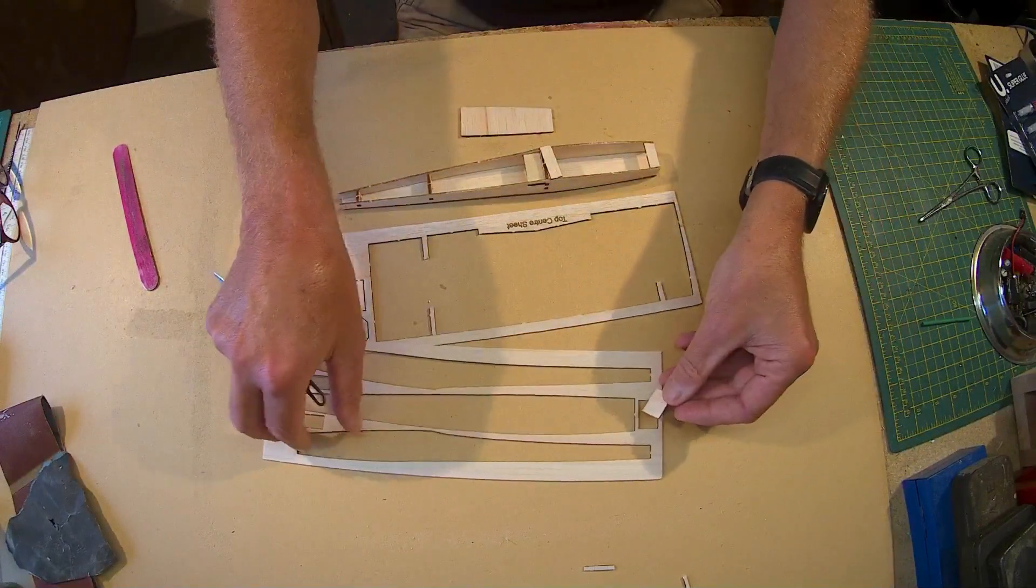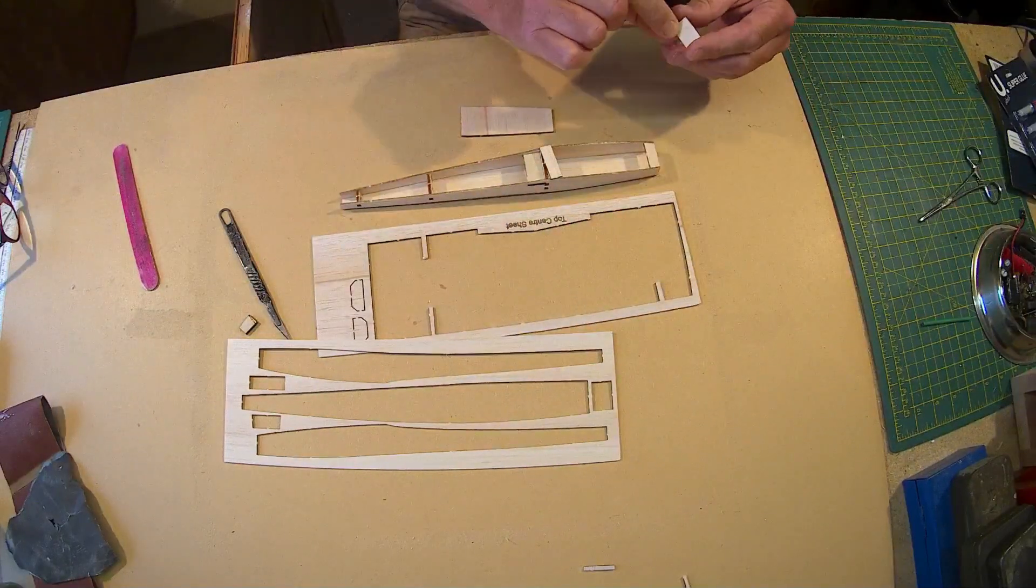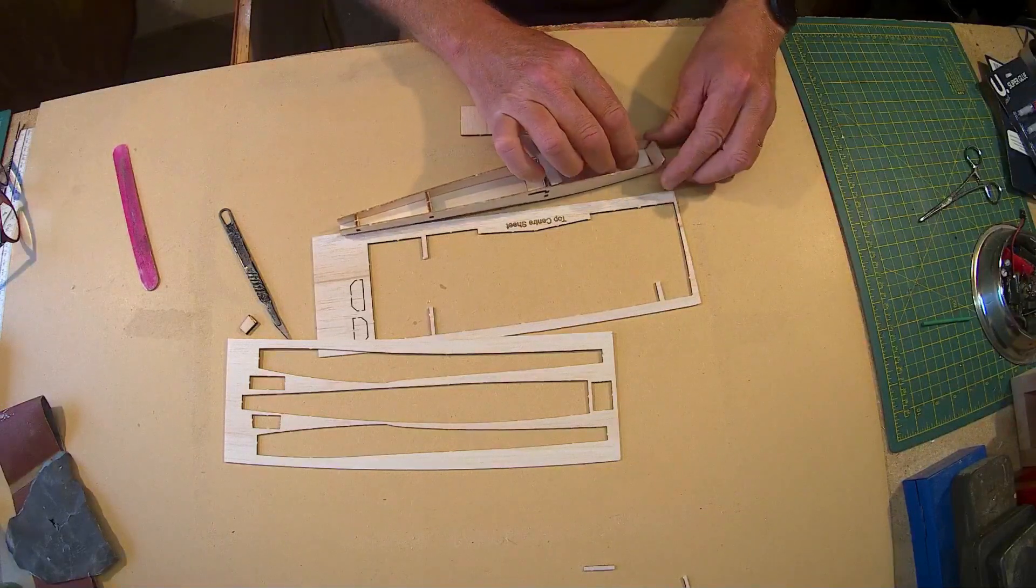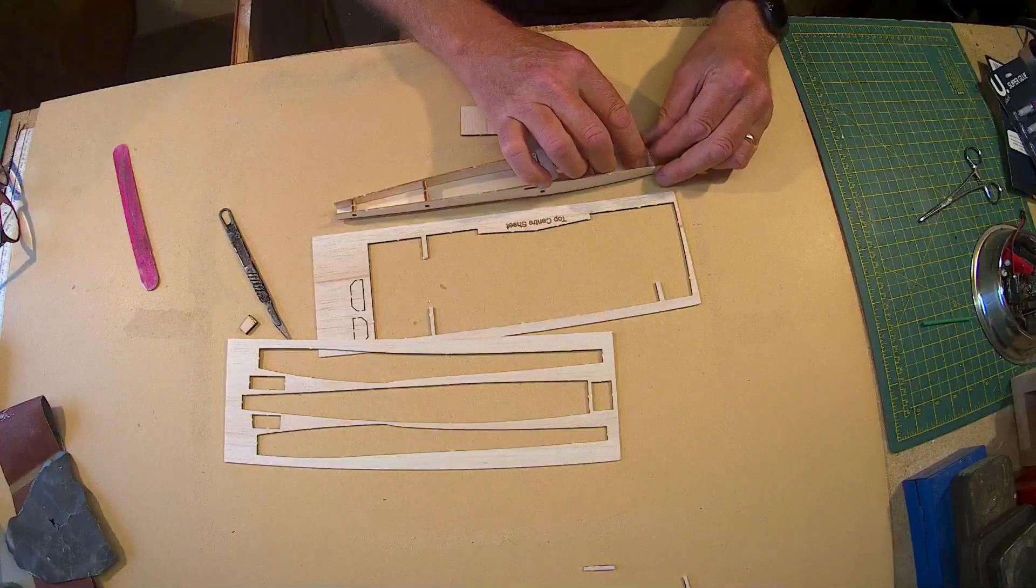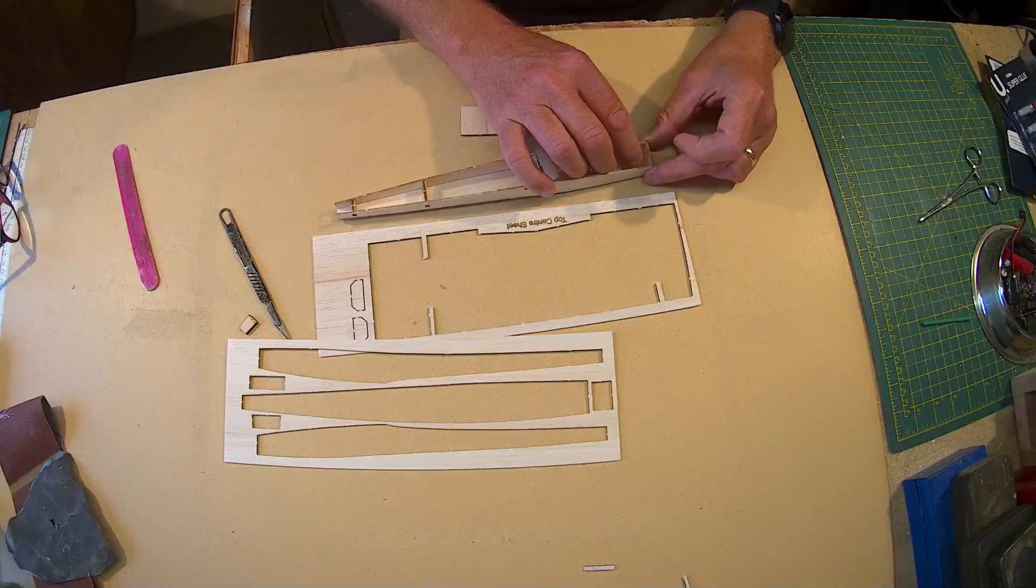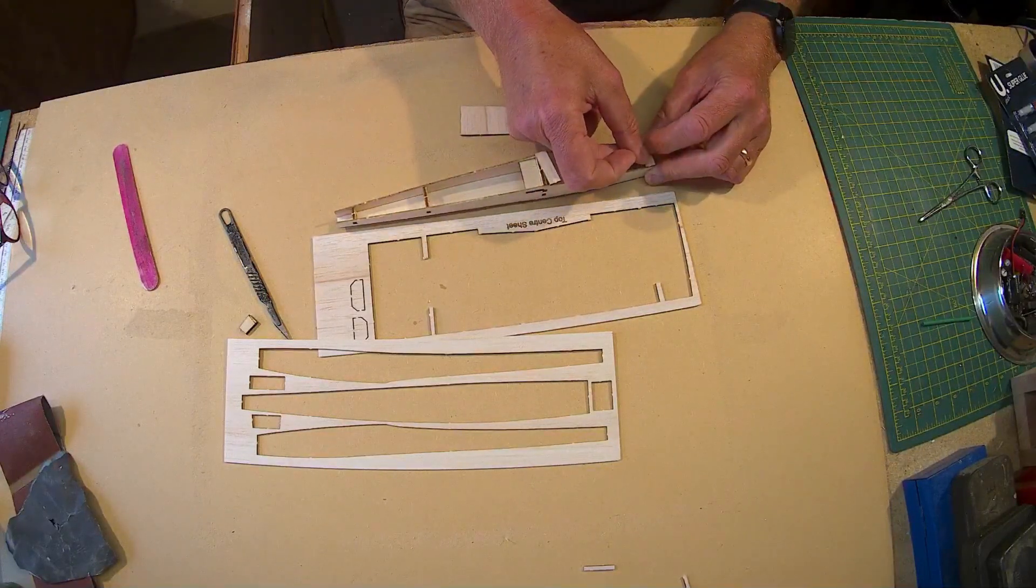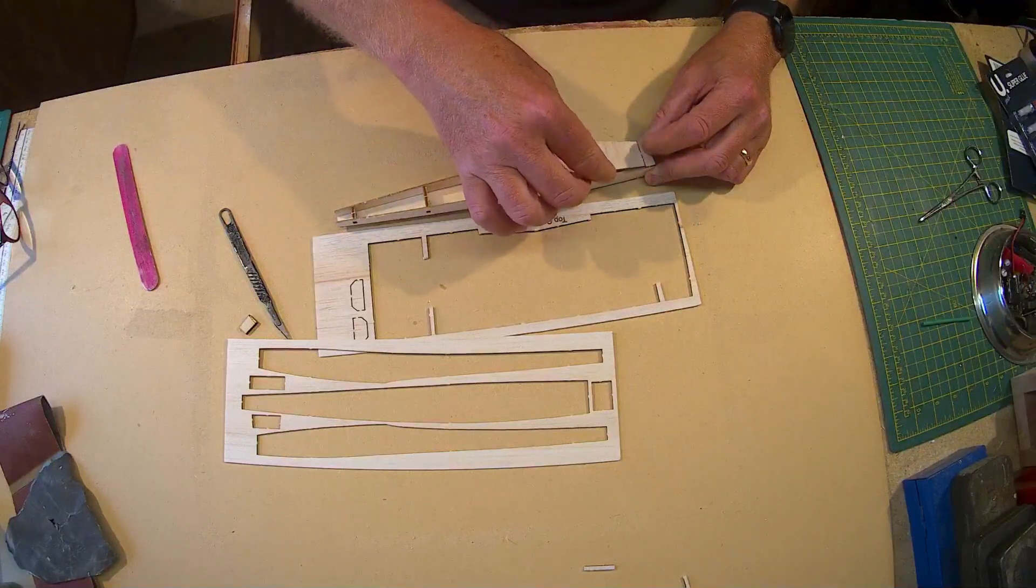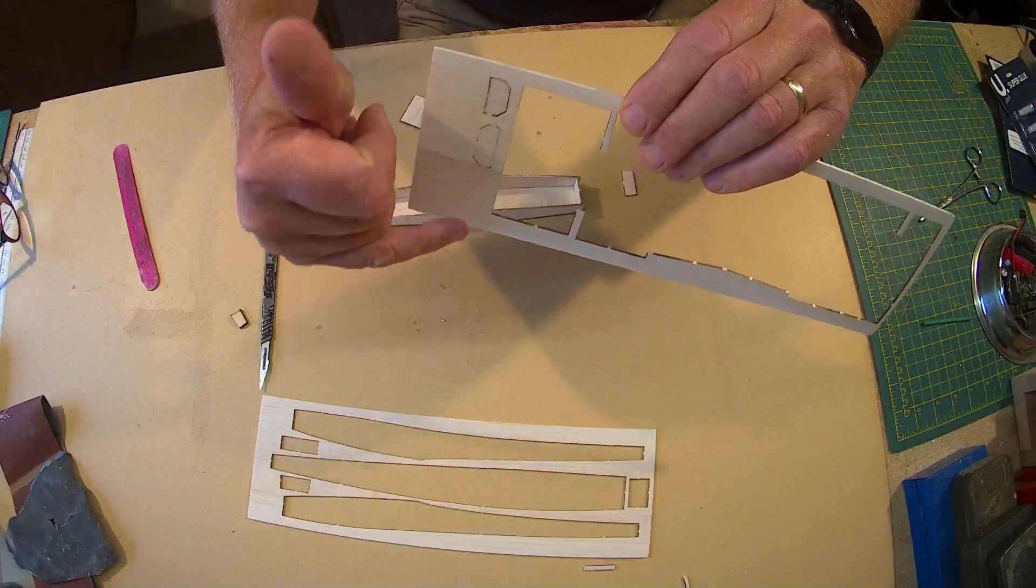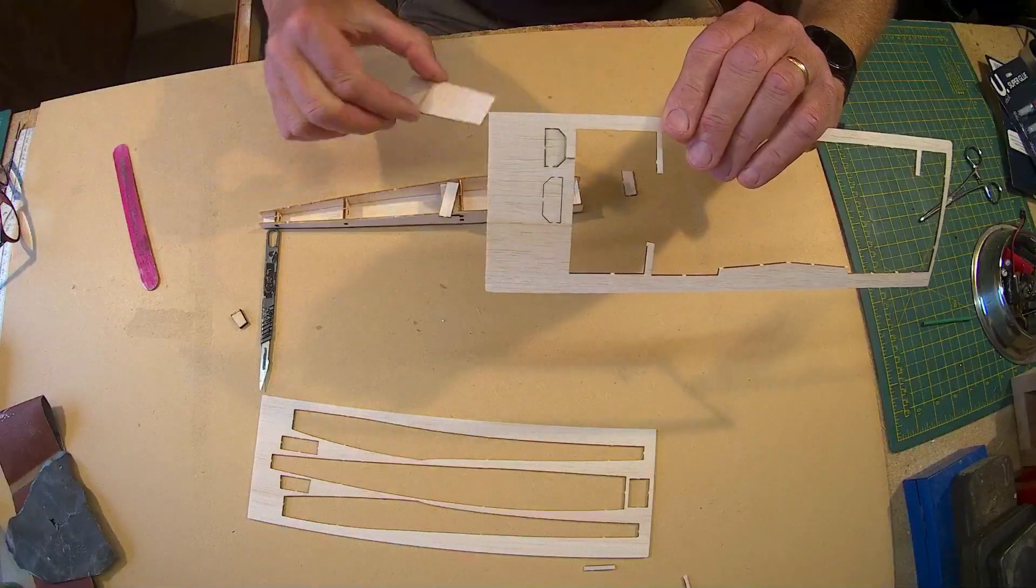And this one here, that shape drops in the nose like so. So you've got that one there, that one sits on there like so, then you've got the hatch, and then you've got this one here - these two are tags, so these are tags for this hatch.